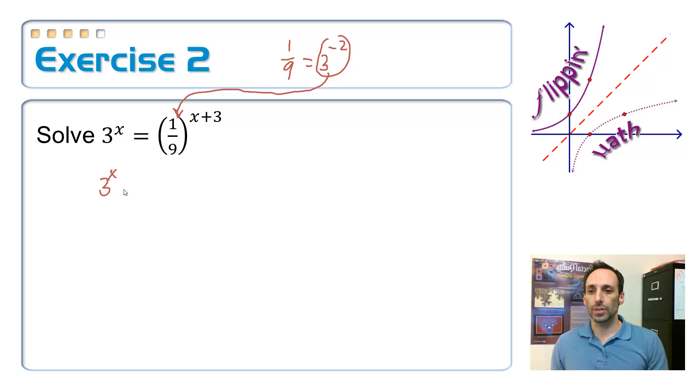3^x is equal to, take out the 1/9 and put in 3 to the negative 2 power to the (x+3).